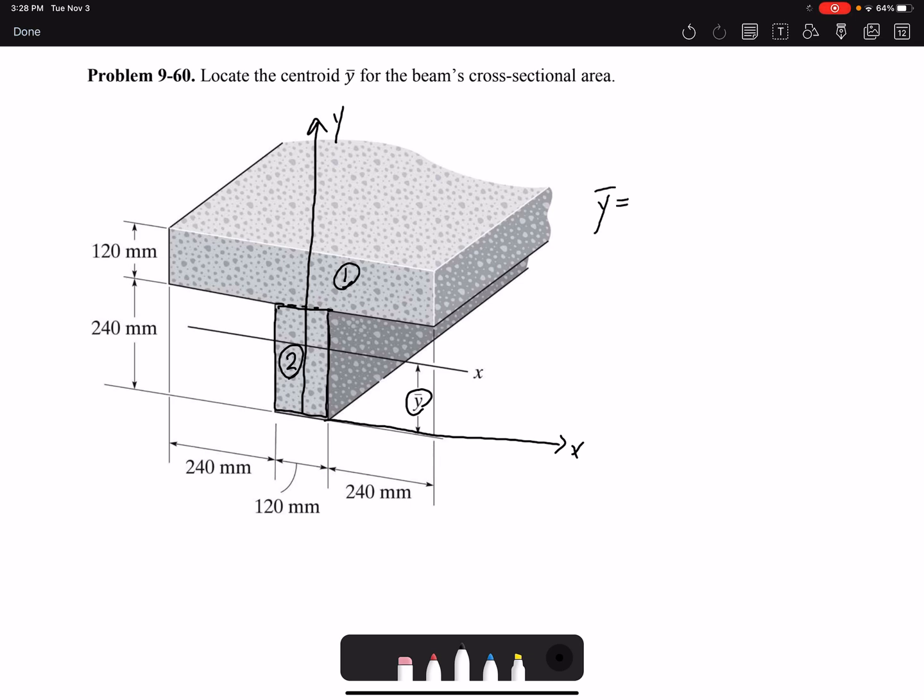Because I have two geometries, it would be Y bar = (Y bar 1 × A1 + Y bar 2 × A2) / (A1 + A2).